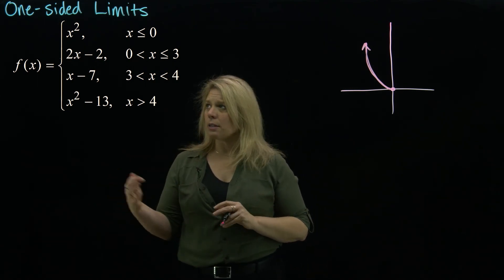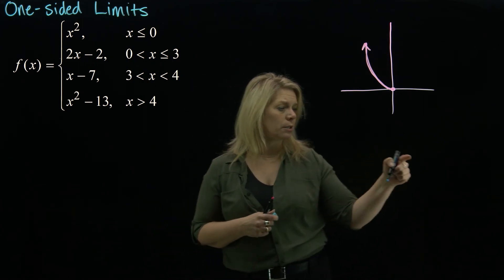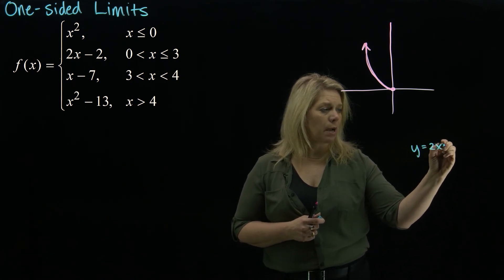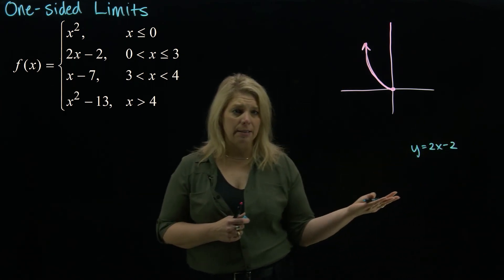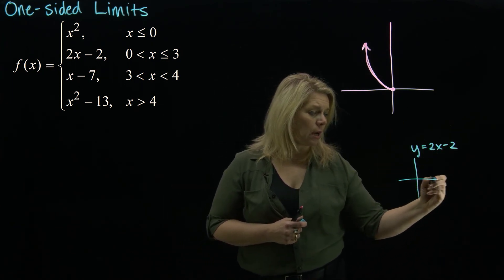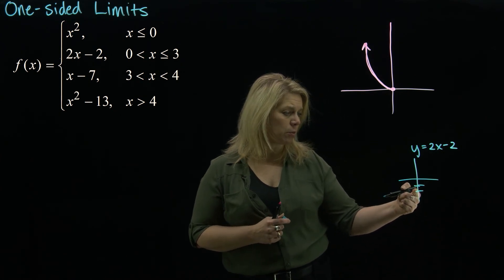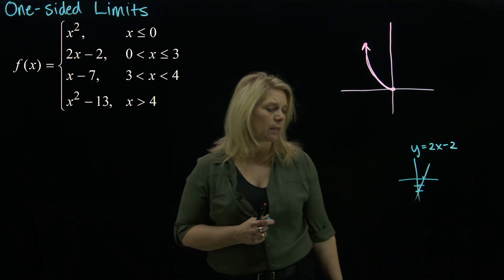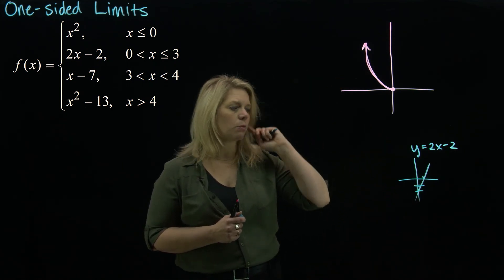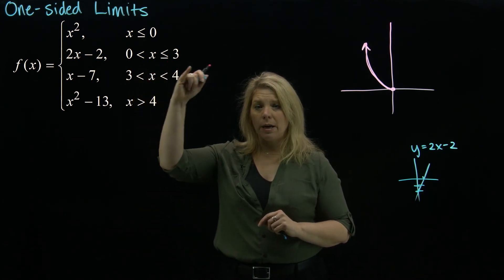The next piece is y equals 2x minus 2. That's the equation of a line with slope 2 and y-intercept negative 2. I'll do a quick scratch graph: y-intercept at negative 2, slope 2 — up 2 over 1. I don't want the whole line though, just the part where x is between 0 and 3, not including 0 but including 3.